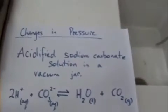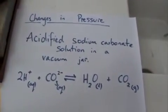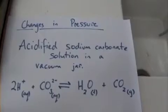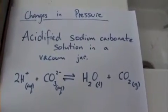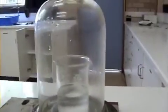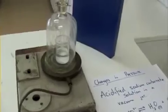And lastly, we're going to have a look at what happens to a change in pressure, or volume of a gas. Specifically, a change in pressure in this one. So we've got acidified sodium carbonate. Sodium carbonate, I've just added a little bit of acid to it. Sitting inside this jar. So we can see this beaker inside a vacuum jar.